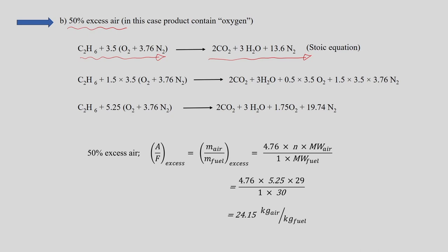With 50 percent excess air supplied, we simply multiply the air by 1.5 because it is 150 percent of the theoretical air. The combustion equation still gives CO2 and H2O as stable products (complete combustion), but now there is excess oxygen coming out: 0.5 × 3.5 moles of O2 in the product gas.